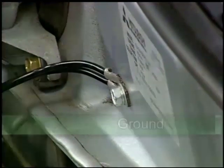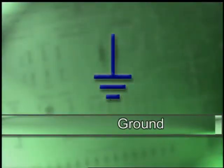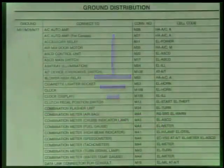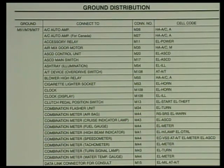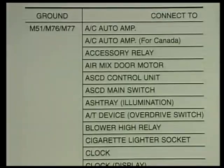All circuits need a ground to complete the circuit. In wiring diagrams, the ground is shown as an inverted letter T with two or more smaller lines under the bottom forming a loose triangle shape. Many repair manuals have a page dedicated to showing the location of the grounds in the engine and body harnesses.